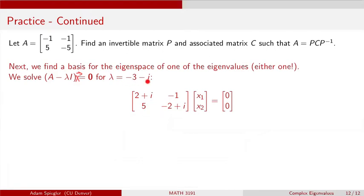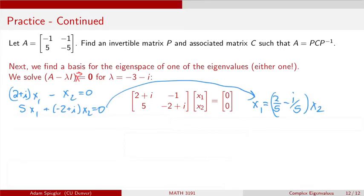Solving this equation using lambda equals minus 3 minus i: subtracting that from the first diagonal entry minus 1, we get minus 1 minus a minus 3, which gives us 2, and then subtracting the minus i gives us plus i. The off-diagonal entries are minus 1 and 5 unchanged. For the last diagonal entry, minus 5 minus a minus 3 gives us minus 2, and subtracting the minus i gives plus i. We can write out the corresponding system of equations equivalent to this matrix equation.